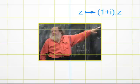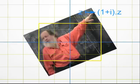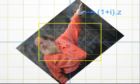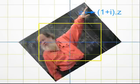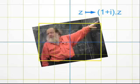Hence, a multiplication by 1 plus i amounts first to multiplying the modulus by the square root of 2, and then to adding 45 degrees to the argument. In simple words, one has to combine a homothety and a rotation. This is called a similarity.